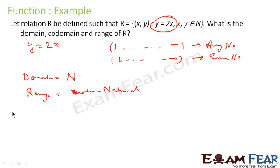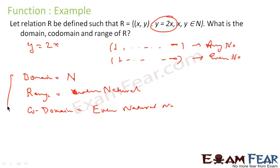Co-domain is all the values in y. Since y is always an even natural number here, co-domain is also the set of even natural numbers. To summarize: for y = 2x with x any natural number, domain is any natural number, range is even natural numbers, and co-domain is also even natural numbers.